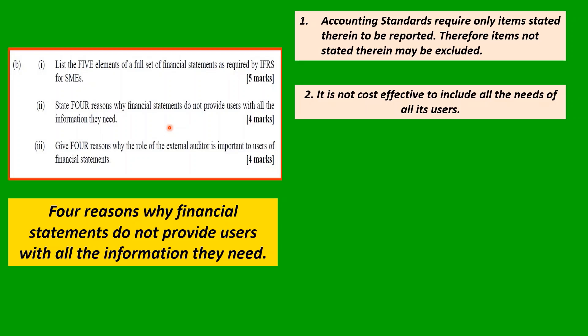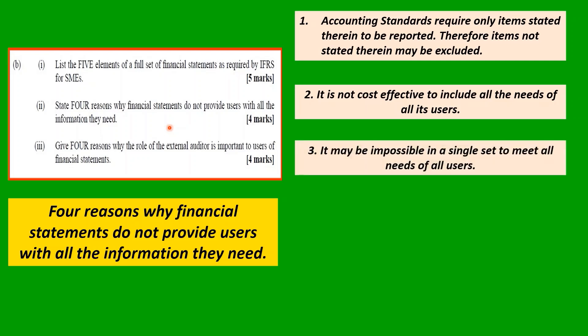Second: it is not cost-effective to include all the needs of all users. If you were to satisfy everybody, the cost of providing the information would go up. Third: it may be impossible in a single set of financial statements to meet all needs of all users. You are constrained to one set of financial statements supposed to satisfy a number of users, so some people will remain with their needs unmet.